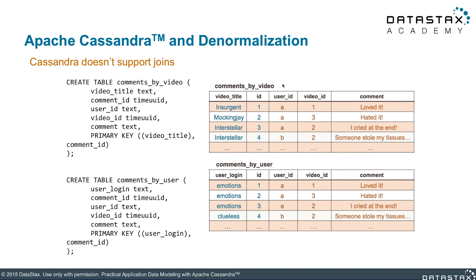The second table, comments_by_user, supports the second view. Notice that this table supports the same data as the first table but with a different primary key — this time, comments are organized with the user ID as part of the primary key, and again a comment ID is used to guarantee a unique row per comment. Note also these tables reflect a common naming convention for Cassandra tables: we append 'by something' to the table name to convey some idea of the query that the table is designed to support.